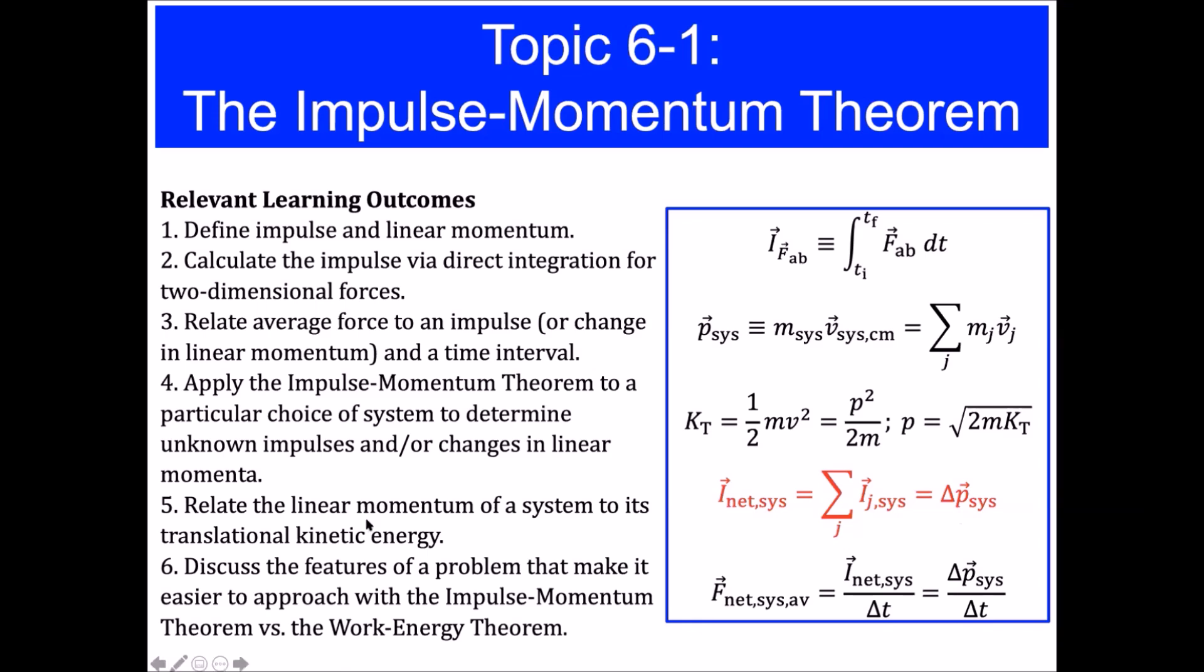What we can also do as outlined in objective number or outcome number five is relate the linear momentum of the system to its translational kinetic energy. And the first thing you want to note is that the momentum vector is a vector and the magnitude of that vector is basically the mass of a system or an object times the system's speed or the object speed. And so in terms of magnitude, linear momentum p is just really a mass m times the speed v.